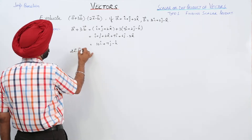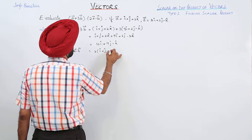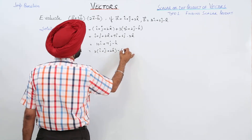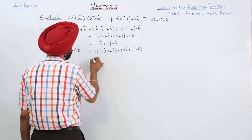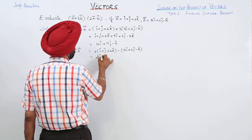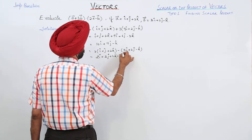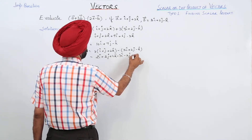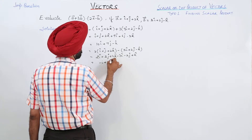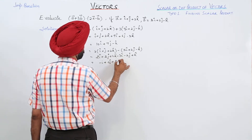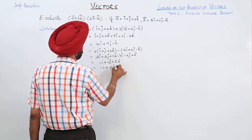For vector 2a − vector b: 2 times (i cap + j cap + 2k cap) minus (3i cap + 2j cap − k cap). This simplifies to −i cap + 0j cap + 5k cap.